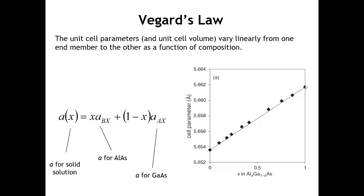What does that mean? Well, one of the things it means is if we were interested in the dimensions of this cubic crystal that we're going to form as a solid solution, we could get any lattice parameter we want between the two end members. It also means that if we were making solid solutions of aluminum arsenide and gallium arsenide and measured the dimensions of the unit cell, from that information we could determine the composition. The equation here gives the lattice parameter of any composition, reflecting this linear relationship — we take the fraction of aluminum arsenide times its lattice parameter, plus the fraction of gallium arsenide times its lattice parameter.